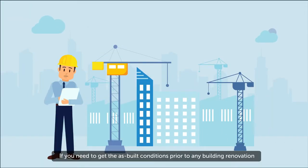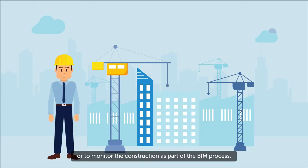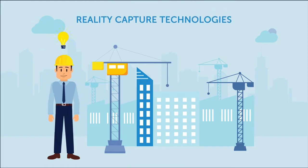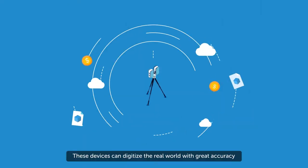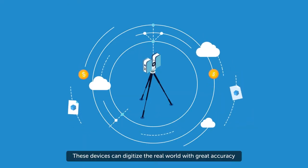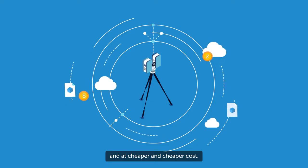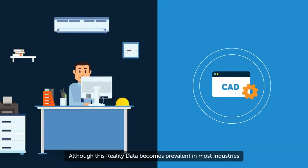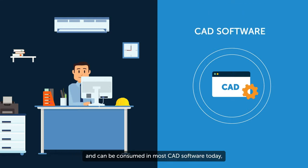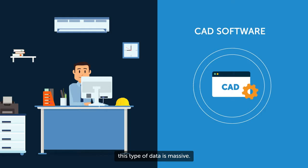If you need to get the as-built conditions prior to any building renovation, or to monitor the construction as part of the BIM process, you need to use reality capture technologies such as terrestrial laser scanners. These devices can digitize the real world with great accuracy and at cheaper cost. Although this reality data becomes prevalent in most industries and can be consumed in most CAD software today, this type of data is massive.